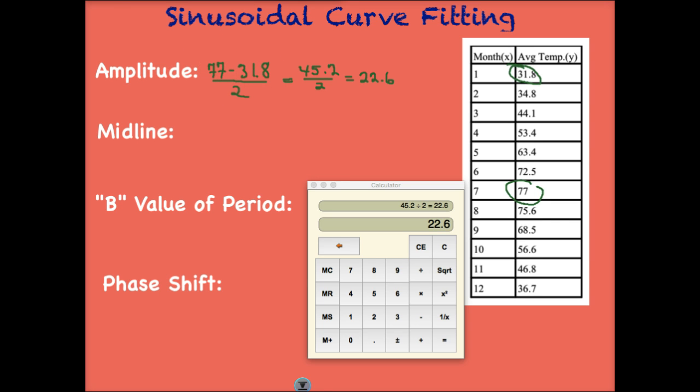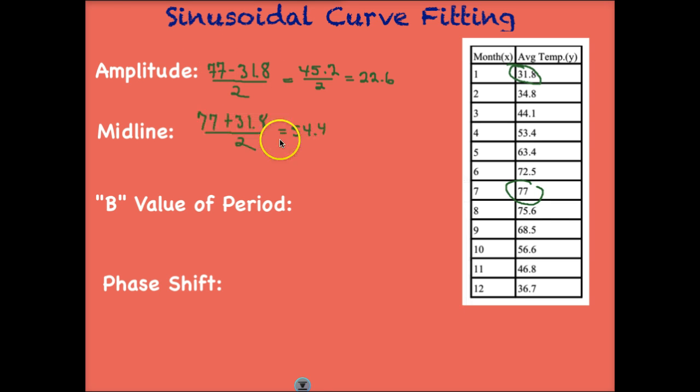How about the midline? Well, we know we're going to add these 2 and divide by 2. For our midline, then, we get 54.4.